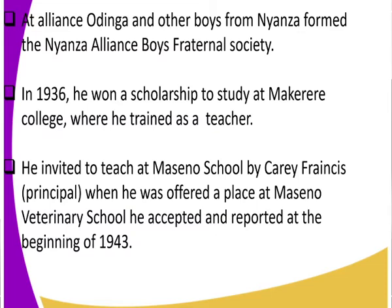Both Daniel arap Moi and Oginga Odinga trained as teachers. However, Moi did not proceed to secondary education — after primary he joined college directly. But for Jaramogi, the path was: Maranda Primary → Maseno School → Alliance High School → Makerere College, where he trained as a teacher.